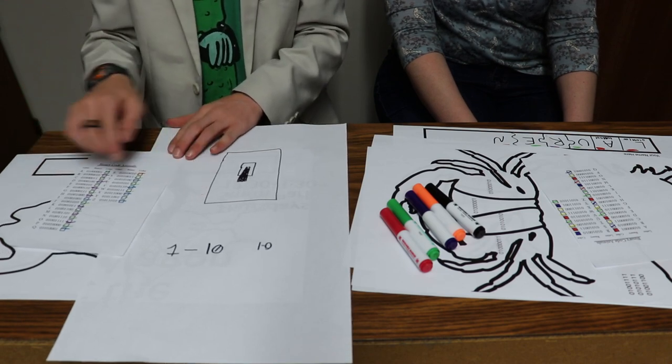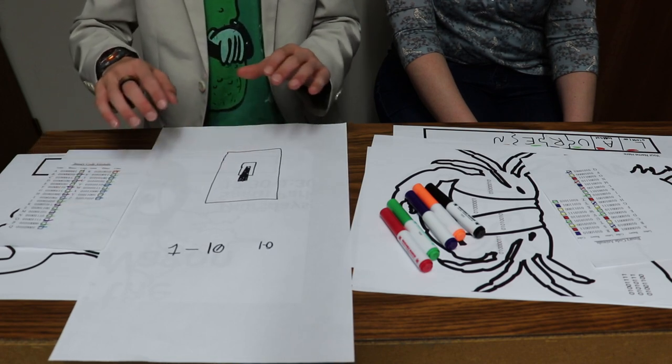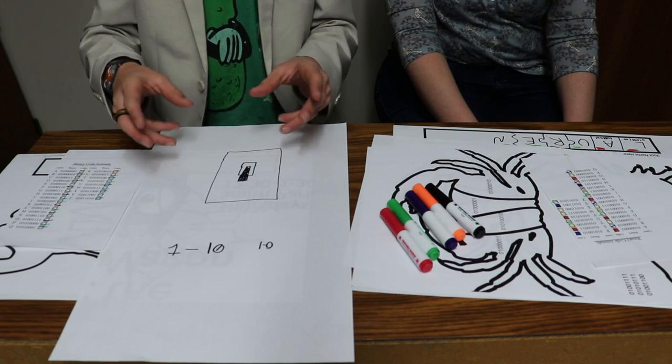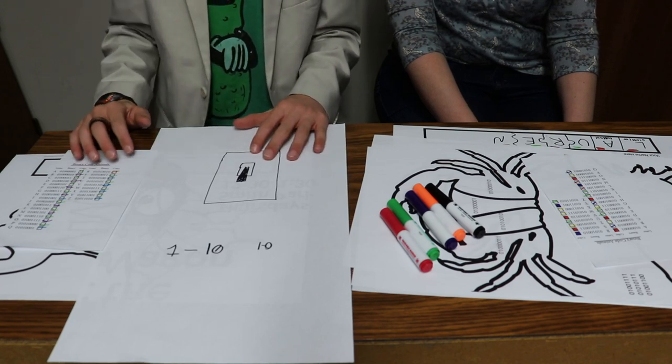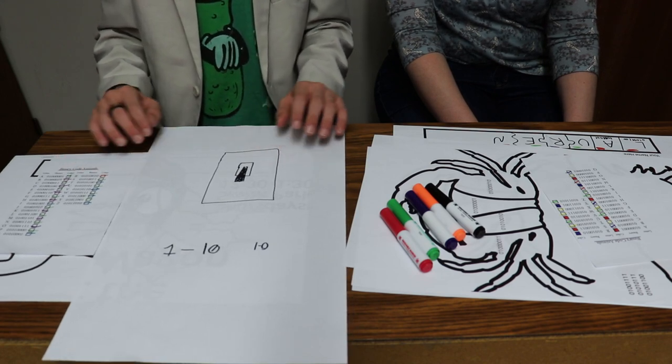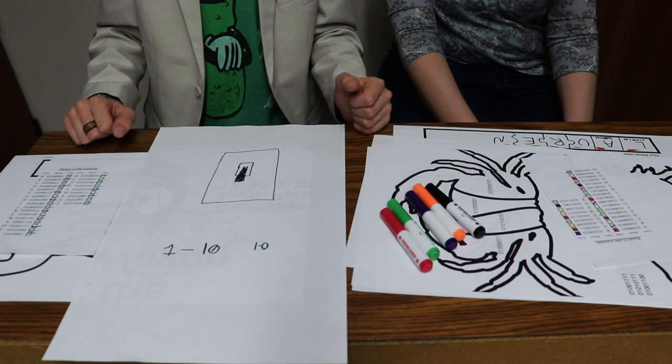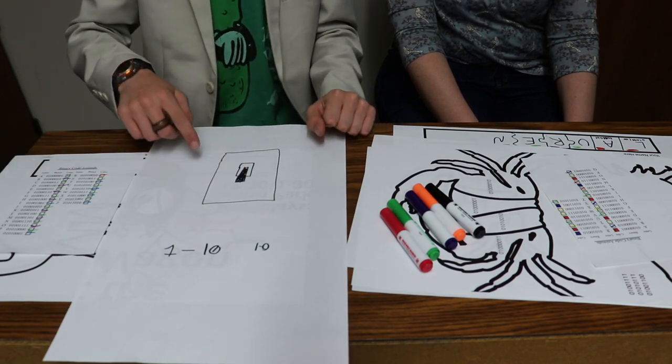So they can only understand ones and zeros, that's how they count. Then what those ones and zeros are doing is it's a language that tells them to turn. If you were to look at your screen with a magnifying glass, you would see tons of tiny little squares and those are called pixels.